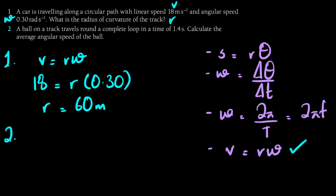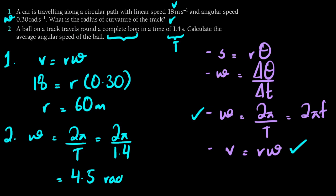The next question: a ball on a track travels around a complete loop in a time of 1.4 seconds. Calculate the average angular speed of the ball. Now we can use the formula omega equals 2π upon T. So omega would be 2π divided by T, so 2π upon 1.4 is 4.487. Because T was to 2 significant figures, let's also write the answer to 2 significant figures—that would be 4.5 radians per second.